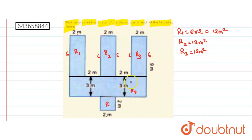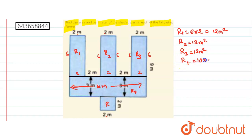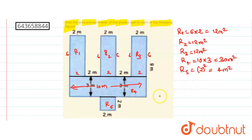For R4, the width is 3 meters. The lengths are 2, 2, 2, 2, 2, 2 — so the total length is 2 plus 2 plus 2 plus 2 plus 2 plus 2, which is 10 meters. So the area of R4 is 10 into 3, which is 30 square meters. For R5, it is a perfect square with side 2 meters, so R5 equals 2 squared, which is 4 square meters.